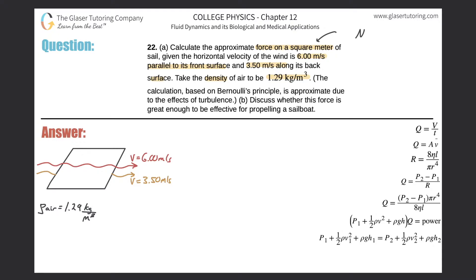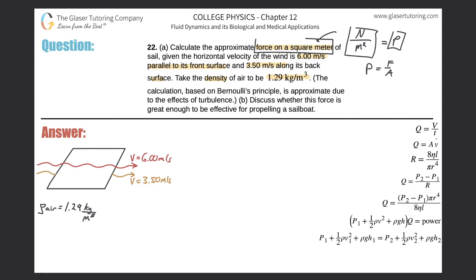What is force? Well, it's newtons per square meter. Knowing the units is important here. Newtons per square meter is simply pressure — remember that pressure equals force over area, with units of newtons per square meter. So really what the question is asking us is to calculate the approximate pressure. That's the first thing: I want to find P.